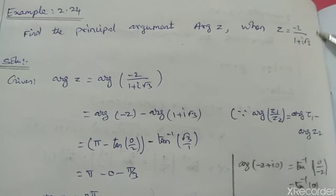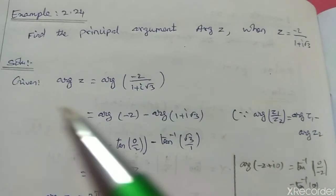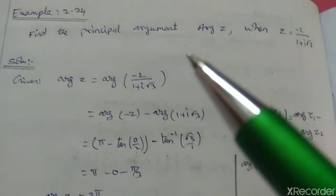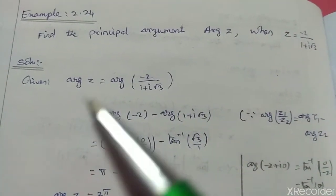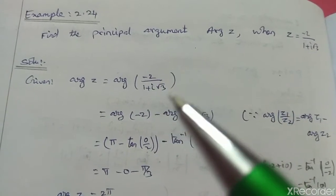Principal argument is being asked. Solution: Given Argument of z equals Argument of minus 2 by 1 plus i root 3.